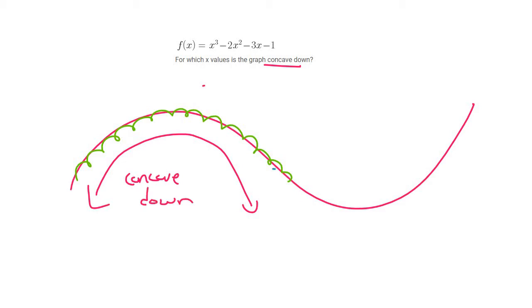Whereas areas like this, where it's pointing up, where the graph is more looking like that, we call that concave up.